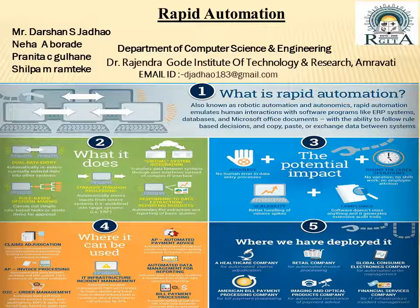What is Rapid Automation? Also known as Robotics Automation, Rapid Automation emulates human interface with software programs like ERP systems, databases, and Microsoft Office documents, with the ability to follow rules, make rule-based decisions, and copy-paste or exchange data between systems.